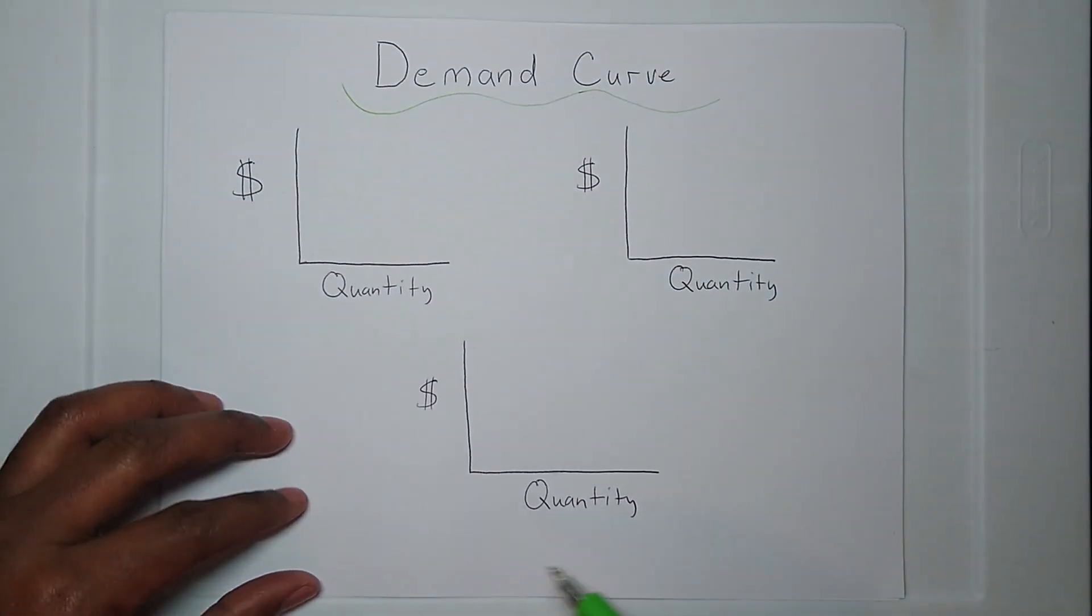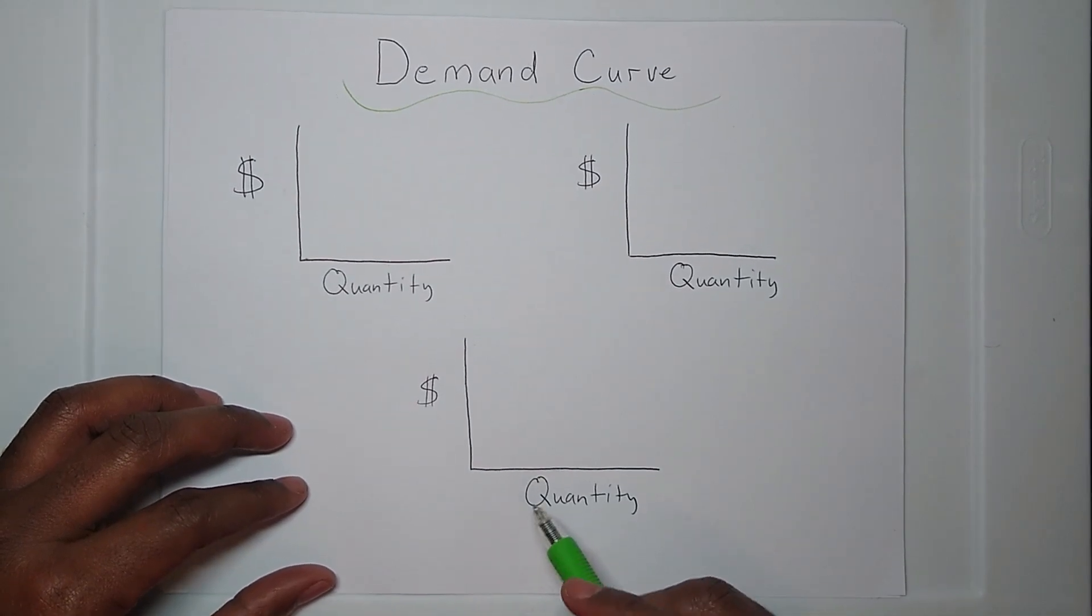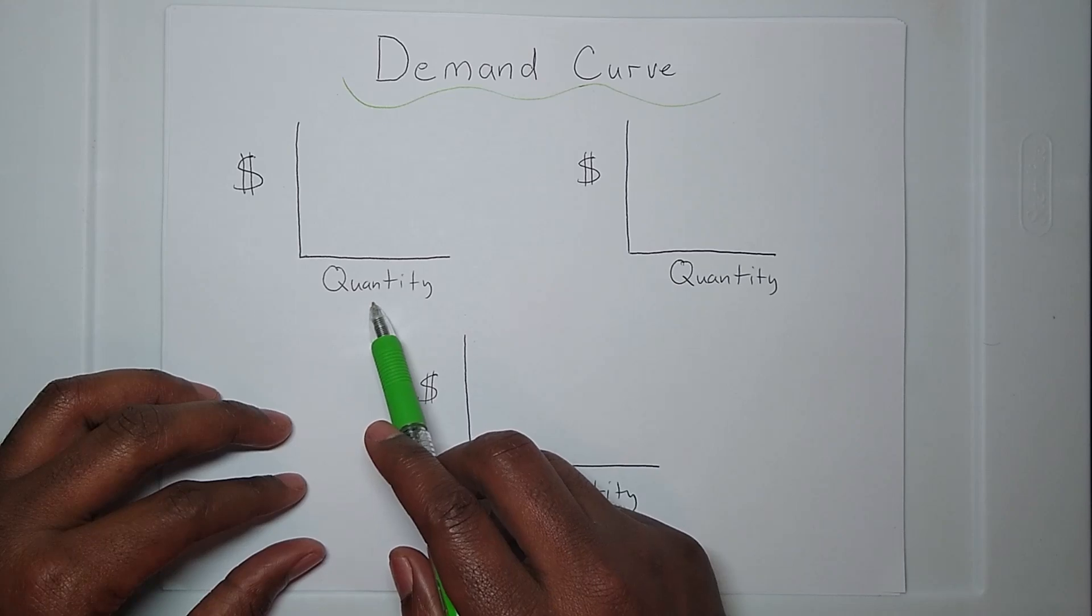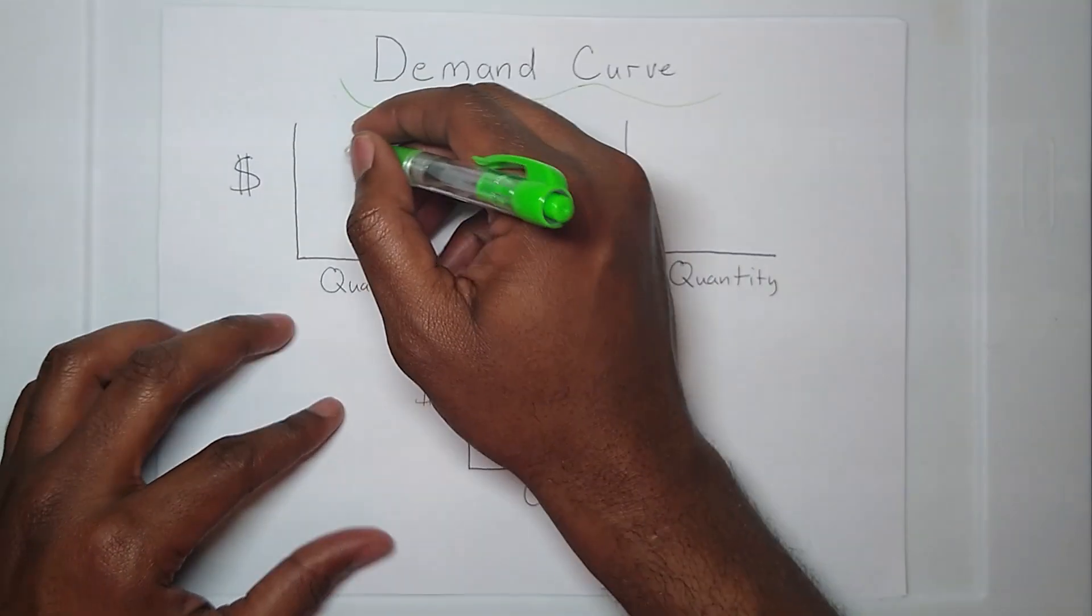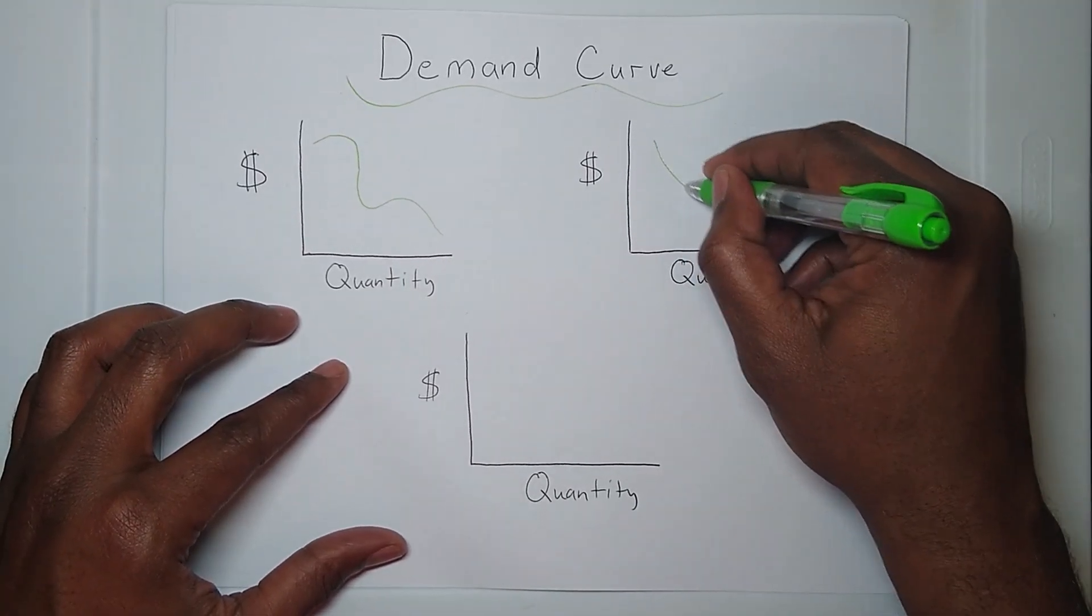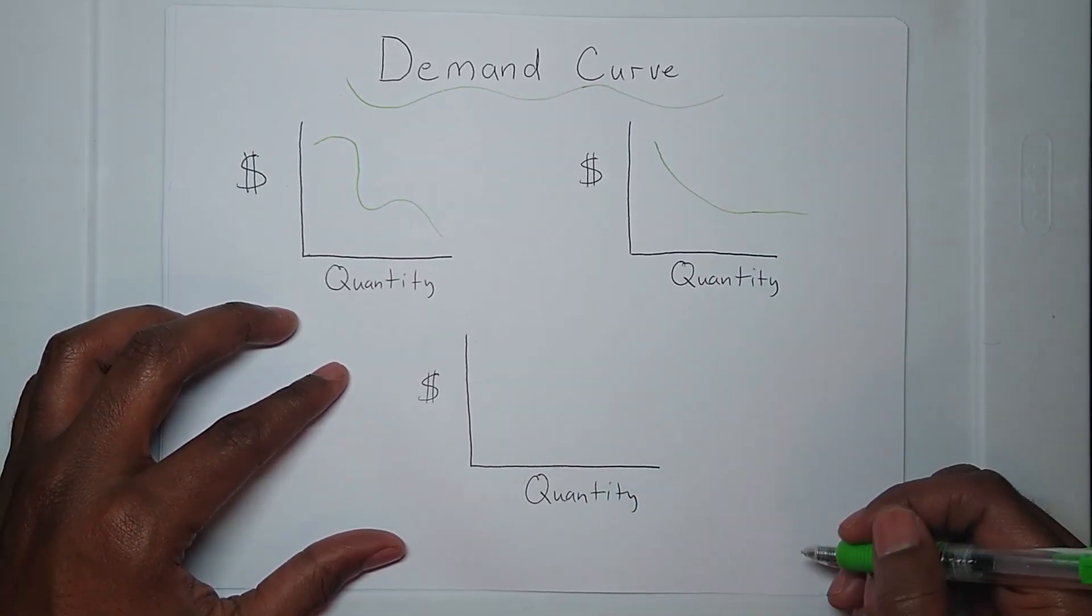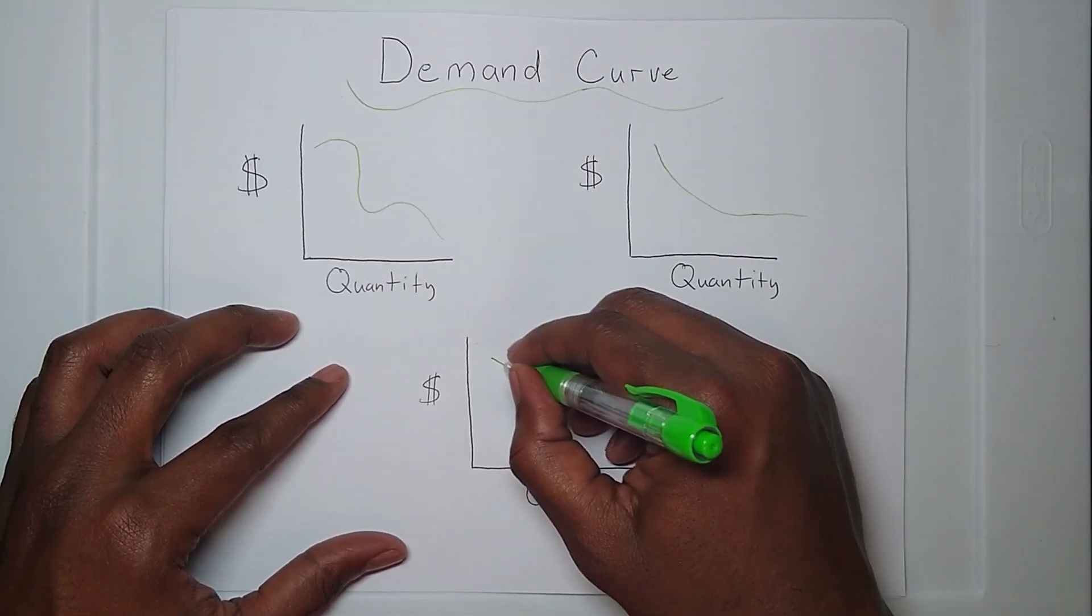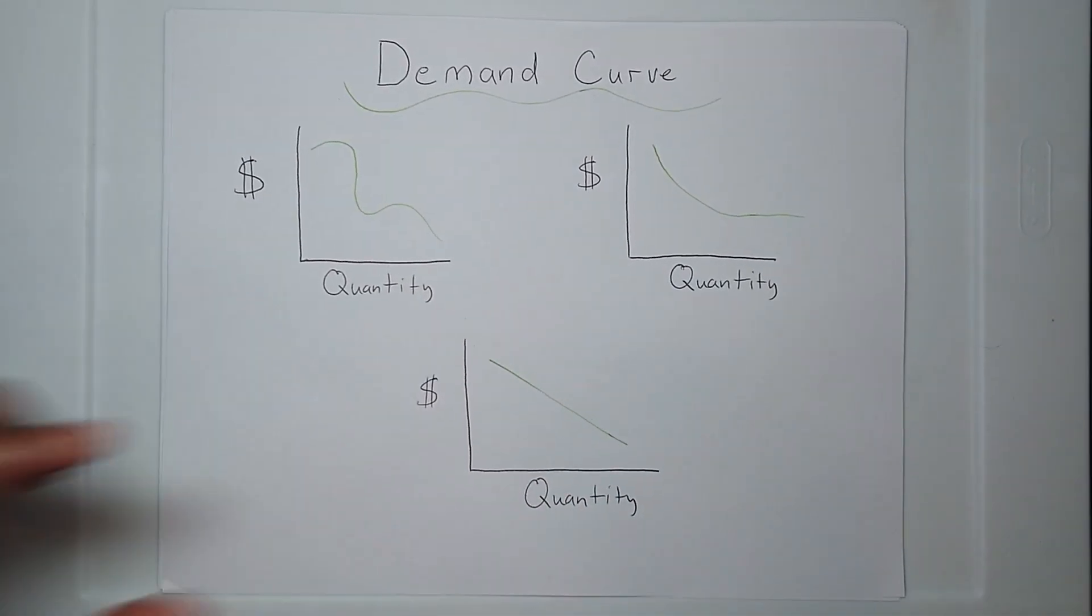Now the demand curve is associated with two variables: the cost and the quantity demanded. In reality, the demand curve can look different ways, but for the sake of explanation, we're just going to assume that the demand curve is a straight linear relationship.